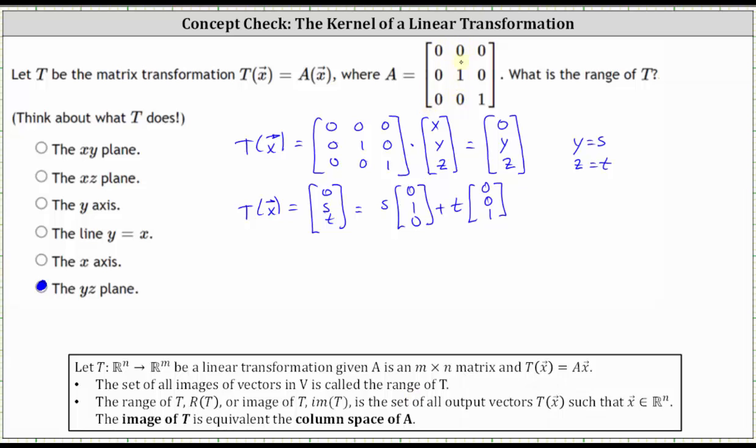So if we look at the columns of matrix A, we have the zero vector in column one, we have the vector (0, 1, 0) in column two, which is the vector E2, and we have the vector (0, 0, 1) in column three, which is the vector E3.